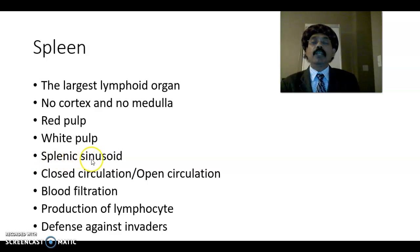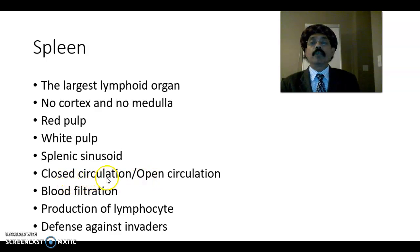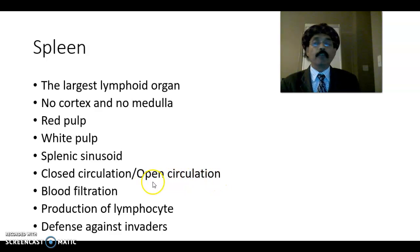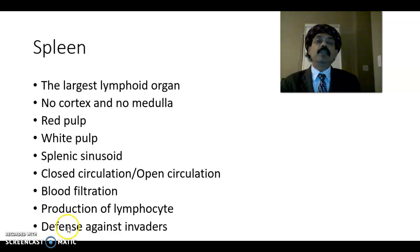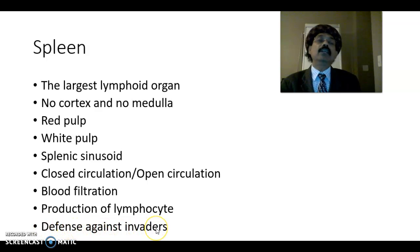We have splenic sinusoids and circulation inside the spleen — both closed circulation and open circulation. In humans, it is mostly open circulation. Blood filtration is a function of the spleen. Production of lymphocytes is also a function of the spleen, and the spleen is a very important organ for defense against invading microorganisms.